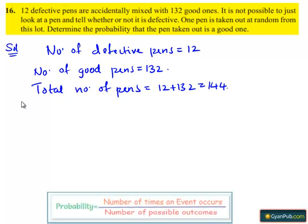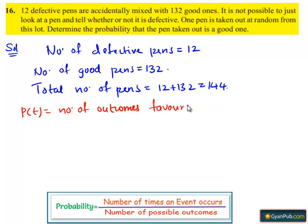We know that probability of any event P of E equals to number of outcomes favorable to event E divided by total number of possible outcomes.